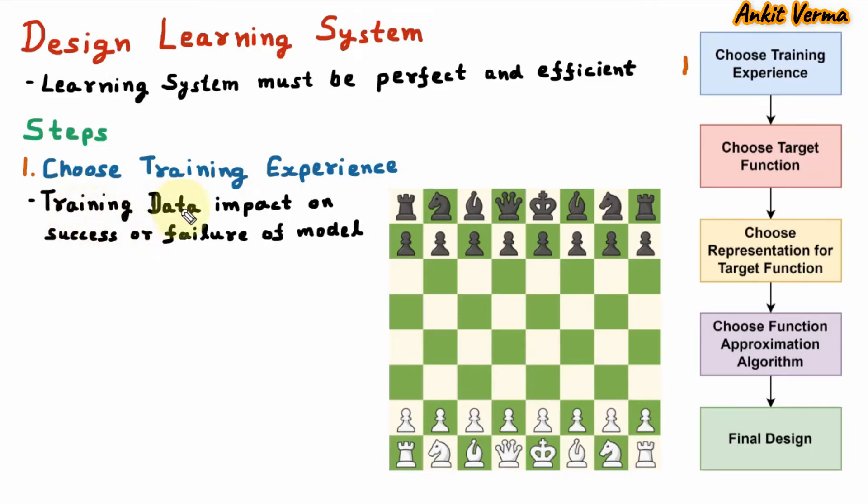If we properly use the training data and train the model, it will become a success. But if we are not training properly, then model will become a failure. There are three attributes of training data.